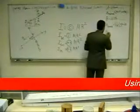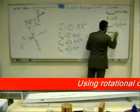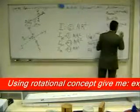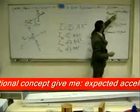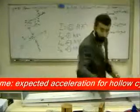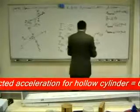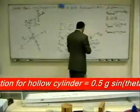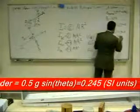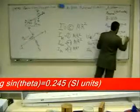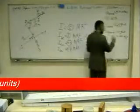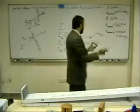The expected acceleration for the hollow cylinder is 0.5 g sin theta. Since sin theta is 0.05 and g is 9.8, this equals 0.245 m/s². Compare this to the case without rotation — it is half the value. I will check this in practical work to see which result is correct.